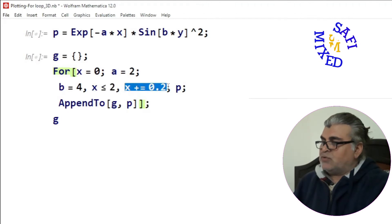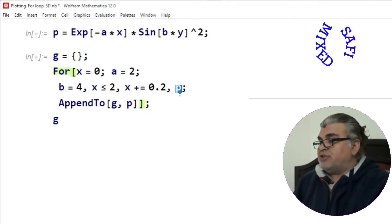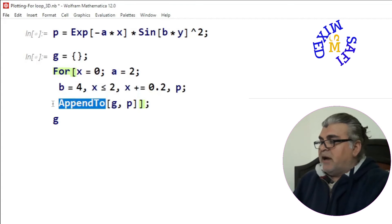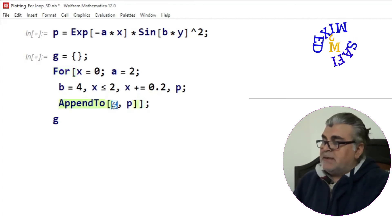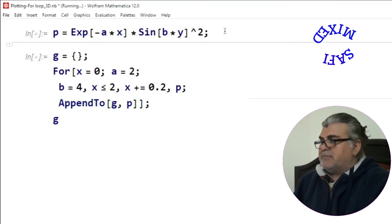And then I'm putting the function p. So with these values I ask Mathematica to generate the values of p for this range of x with increment 0.2, and then I ask Mathematica to append the value to the empty list g. If I run this part of the program, I get this value of the list g.